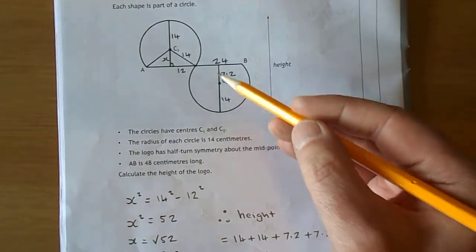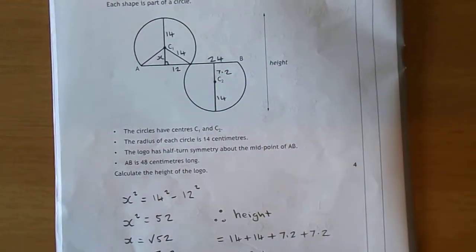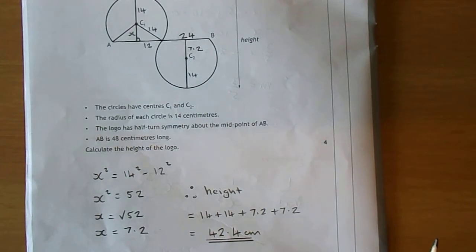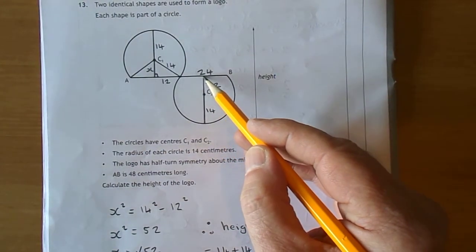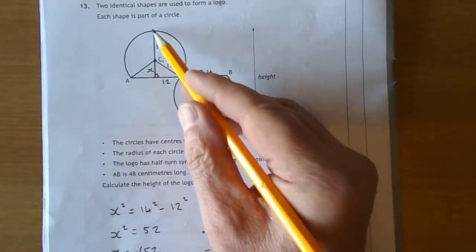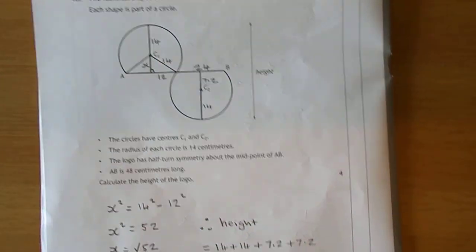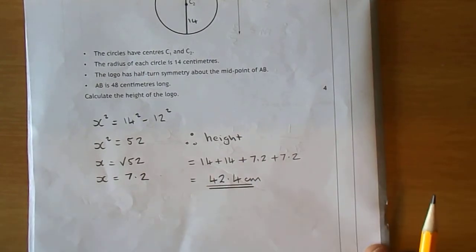You can get the height of one and double it like I said earlier, but I've decided to take it nice and easy. What's the height? It's 14 plus 7.2, that's the same as that, plus another 7.2 plus another 14, which gives you 42.4.